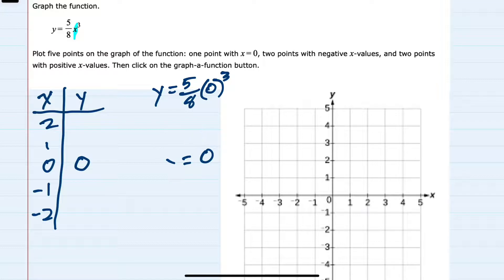Repeating the process by substituting in negative 1 for x gives us 5 eighths times negative 1 cubed. Simplifying here, negative 1 cubed is negative 1.